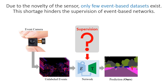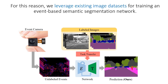However, due to the novelty of the sensor, semantic segmentation datasets for event cameras are scarce. To tackle this problem, we propose a method that can leverage existing image datasets for training an event-based semantic segmentation network.